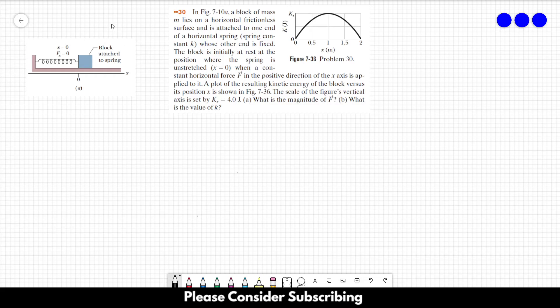Number 30. In this figure here, a block of mass M lies on a horizontal frictionless surface, and it is attached to one end of a horizontal spring, whose other end is fixed. The block is initially at rest at the position where the spring is unstretched, when a constant horizontal force F in the positive direction of the x-axis is applied to it.